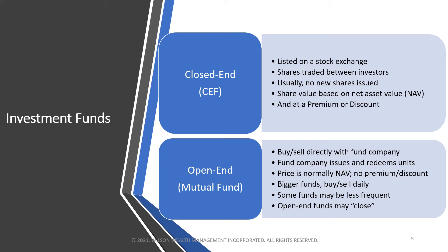On the other end, we have open-end mutual funds. Here, you actually buy or sell directly with the fund company. The fund company issues and redeems units — there are no trades on stock exchanges. The price is normally simply just the NAV because the fund company redeems and issues at NAV, so there's really no need for premiums or discounts. The bigger funds all buy or sell on a daily basis. At the end of the day they calculate the NAV, and that's the price you can buy or redeem at. Then the next day the process repeats.